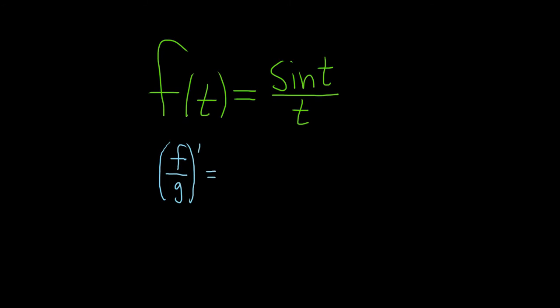So f is your top function, and g is your bottom function. It's the derivative of the top times the bottom minus the top times the derivative of the bottom all over the bottom one squared. That's the quotient rule.